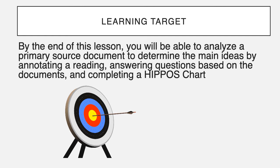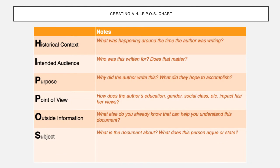A primary source document is a document that was written at the time period you are studying. We use a strategy called HIPPOS to try to figure out what someone says. Because everybody who writes — just like you — if I were to tell you to write the story of your freshman year, you would all have different stories. And if I as an adult were trying to find out what a ninth grader goes through and I read five different stories that were all different, I would have to figure out how to come up with the picture myself.